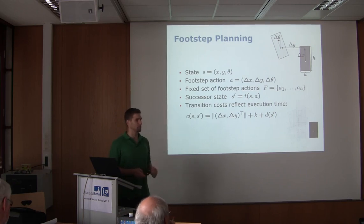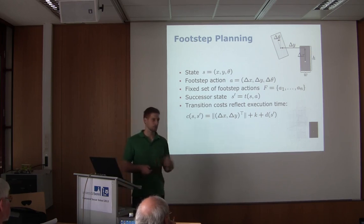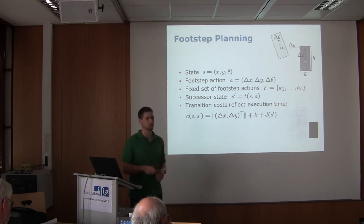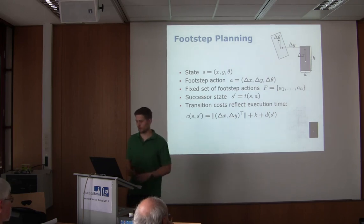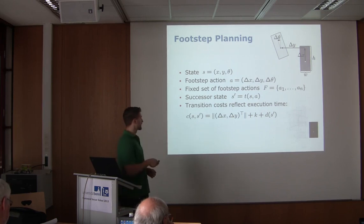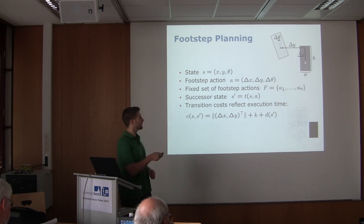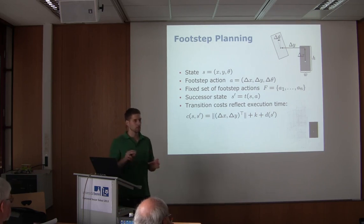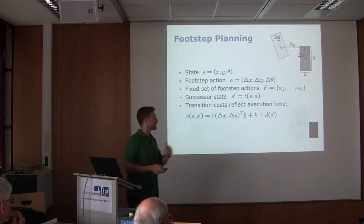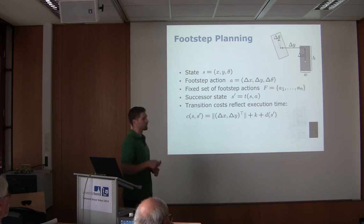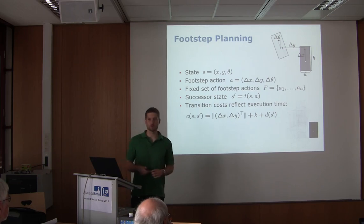We assume a fixed set of footstep actions defined by the robot's kinematic configuration. For example, the NAO has API functionality that enables stepping to certain locations with one foot — with a maximum delta x, maximum delta y, and maximum orientational change. We discretize the stepping range into a set of useful stepping motions. The successor state is obtained by applying the transformation given by the action, and we assume the walking foot alternates at every state transition.